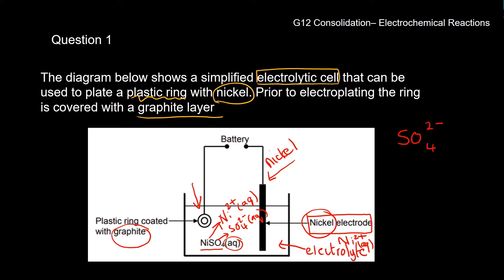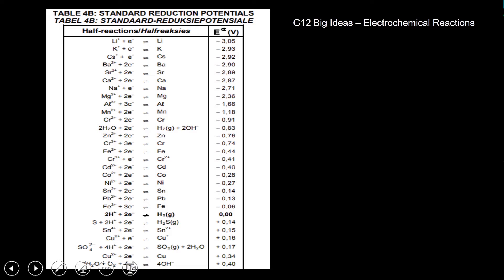This is an electrolytic cell — how do I know? It has a battery on the outside, an external circuit that is providing the energy. So this is electrical energy converted to chemical potential energy. I have given you a standard reduction potentials table so you can see how to use it when you don't know what reactions are happening.